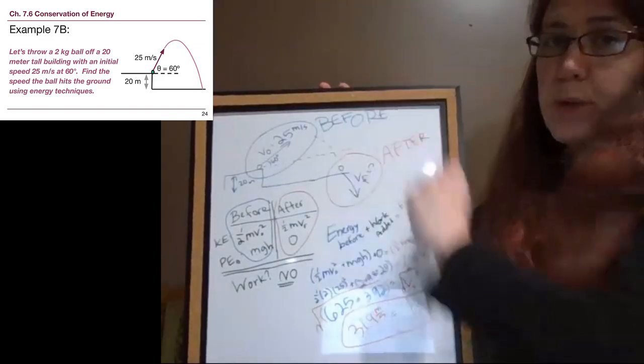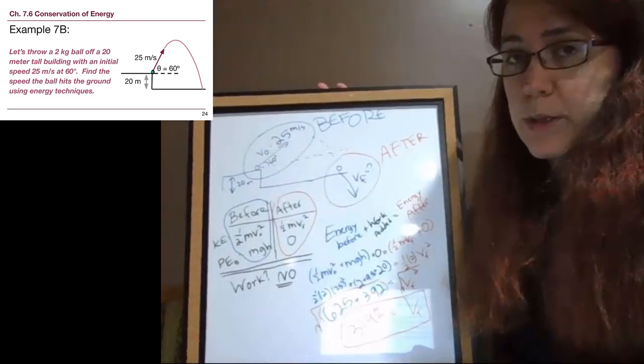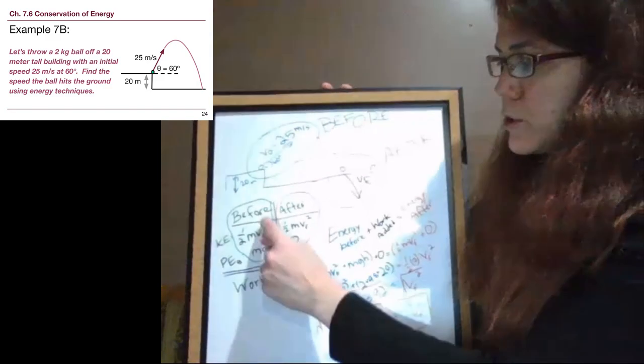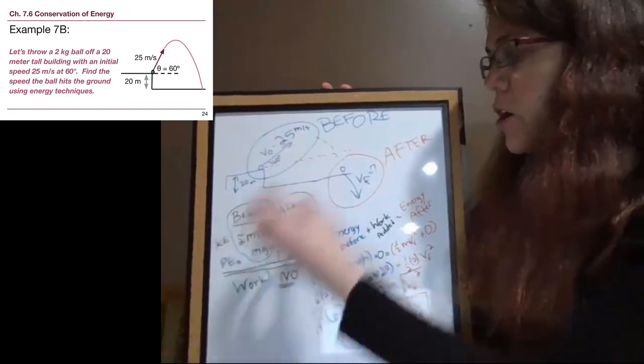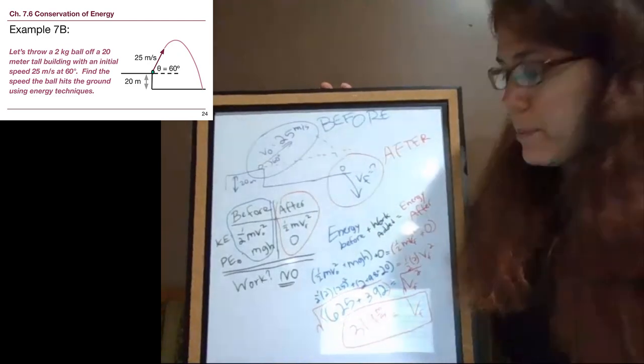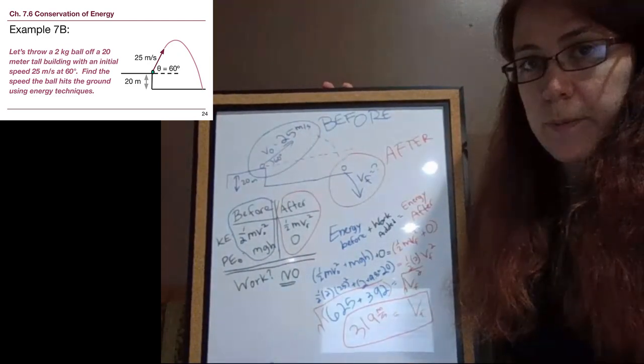If it had landed at a higher point, if it had landed on top of a higher building, then we would have expected a smaller speed. But because we had two terms worth of energy that then all got put into one big term at the end, we are happy that we got that final velocity to be a bigger number.